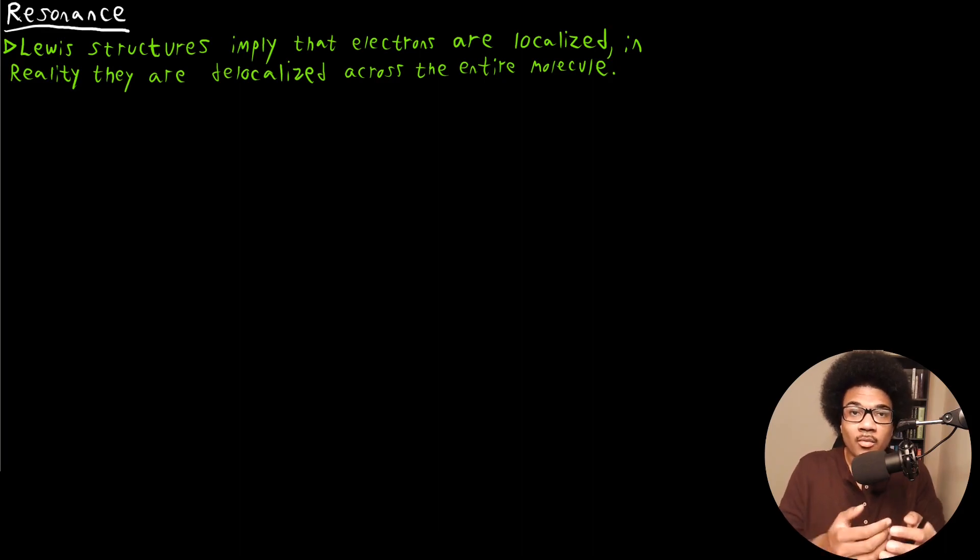In this video, we're going to discuss resonance and resonance structures. One thing I want to make clear from the beginning is that the Lewis dot model is a model, and there are some deficiencies in that model. One of the main deficiencies of just the Lewis dot model alone is that it implies that these electrons are localized. It implies that the electron is localized around a bond, localized in lone pairs around a single atom. And this makes for a good model to understand bonding and reactivity.